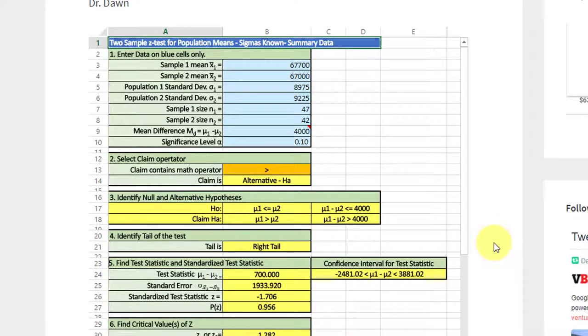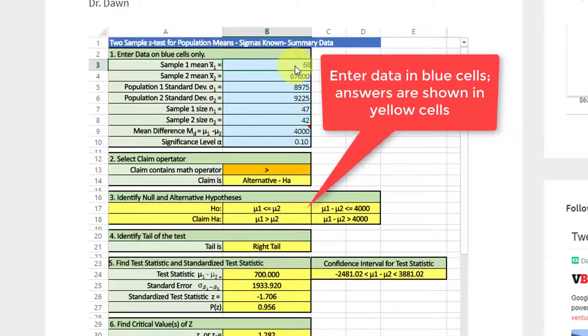Now we just need to enter our data here. Our X1 bar is 68,500. Our X2 bar 64,000. Our sigma 1 is 8850. Our sigma 2, 9150. Our N1 is 44. Our N2 is 41. The difference is 5,000. Our alpha equals 0.1.